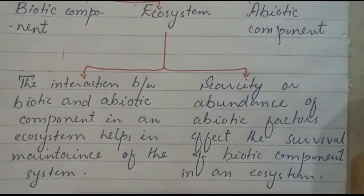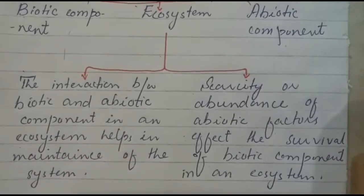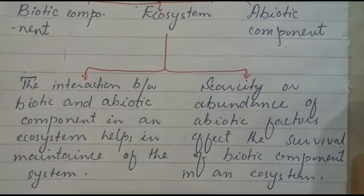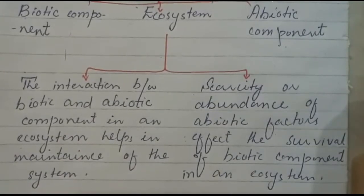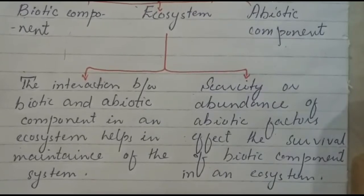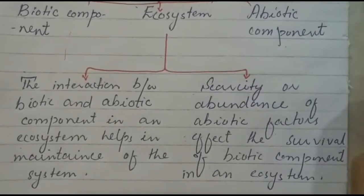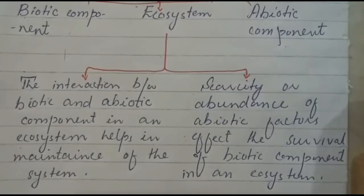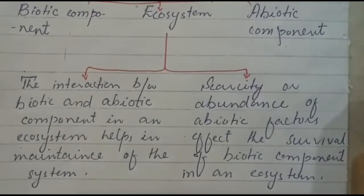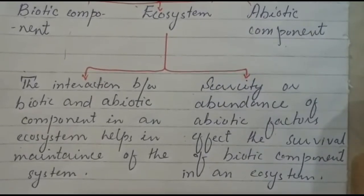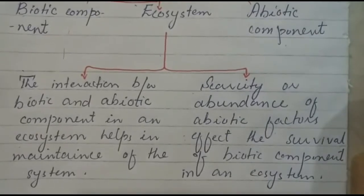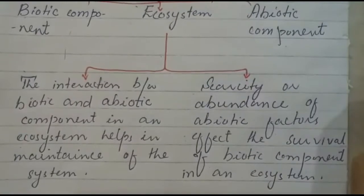The interaction between biotic and abiotic components in an ecosystem helps in the maintenance of the system. If there is scarcity or abundance of any abiotic factor, it will affect living organisms. For example, people from hot areas cannot easily survive in very cold climates because their bodies are not adapted to produce enough body fat like those in cold areas.